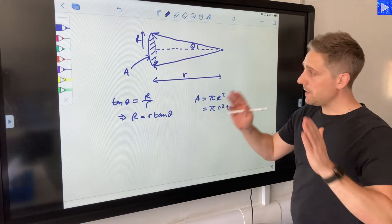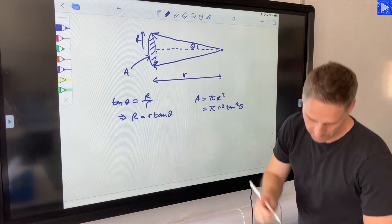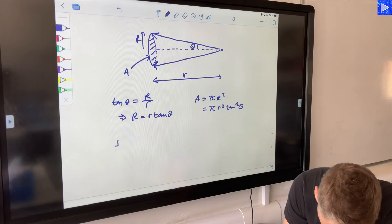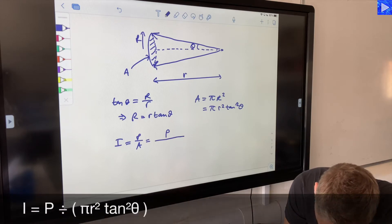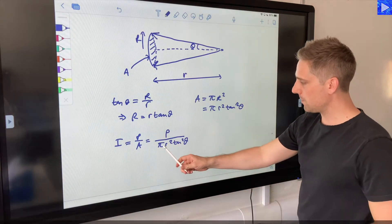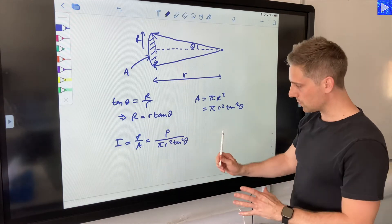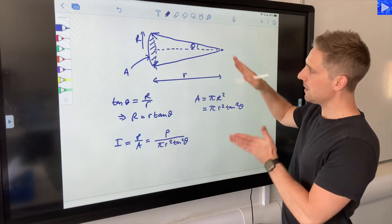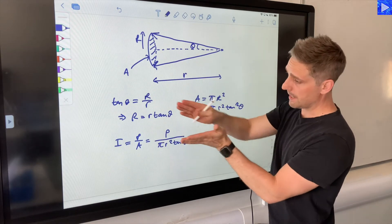Intensity is power of the source divided by the area that it's covering. So I would be P over A, which is P over pi r squared tan squared theta. Now these terms here, the pi and the tan squared theta, are constant because we're assuming that it's spreading out in that very straight conical way.